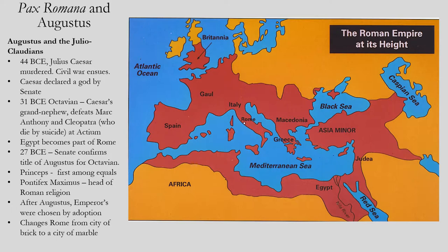Augustus is considered what is called the princeps — the first among equals. He is part of the Senate, but he is also better than the Senate; he is the guy in charge. He is also the Pontifex Maximus, the head of the Roman religion. After Augustus, emperors are chosen by adoption — sometimes choosing their children, sometimes political allies, sometimes military commanders who helped achieve military success. It really depends on the emperor.